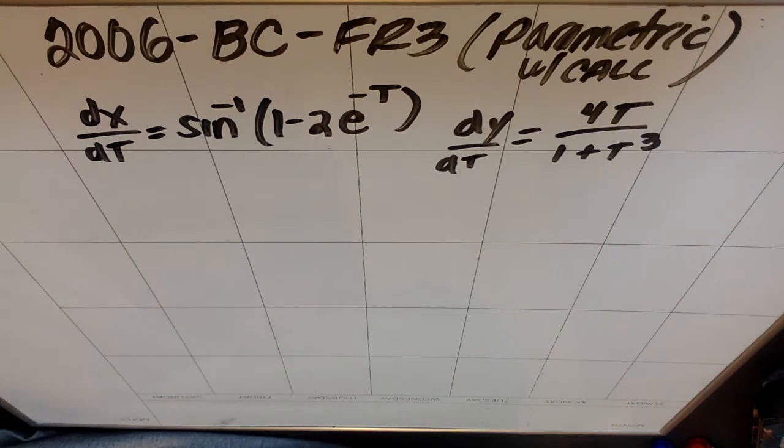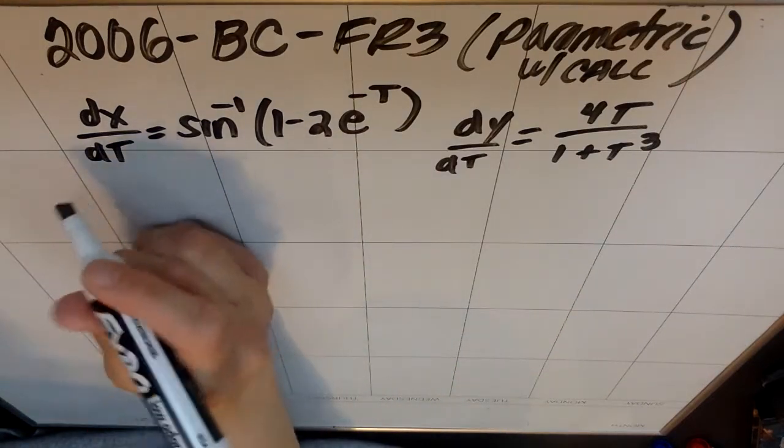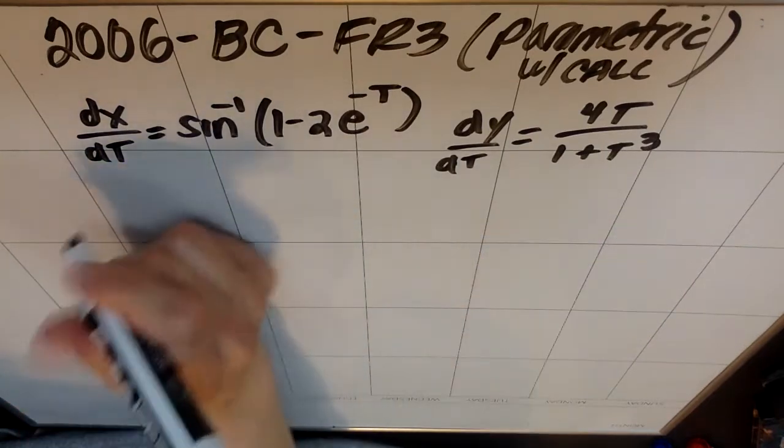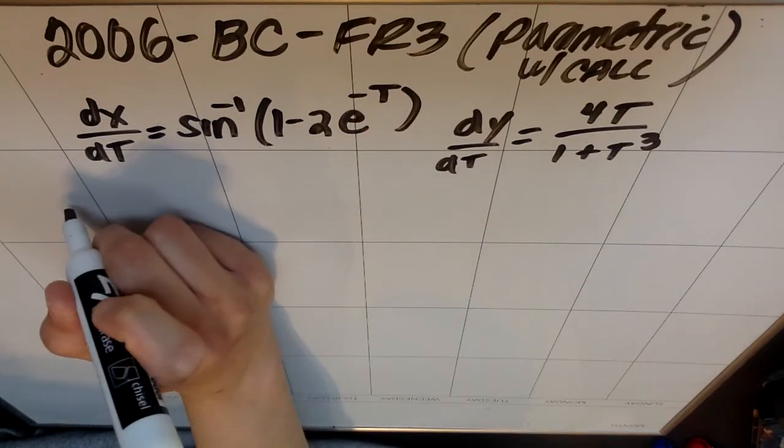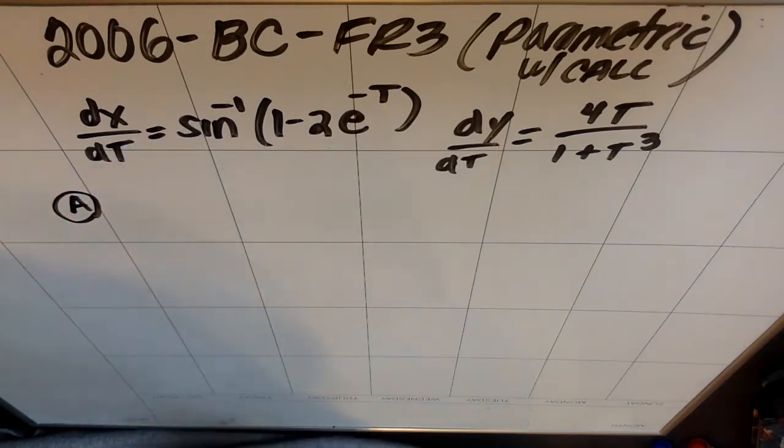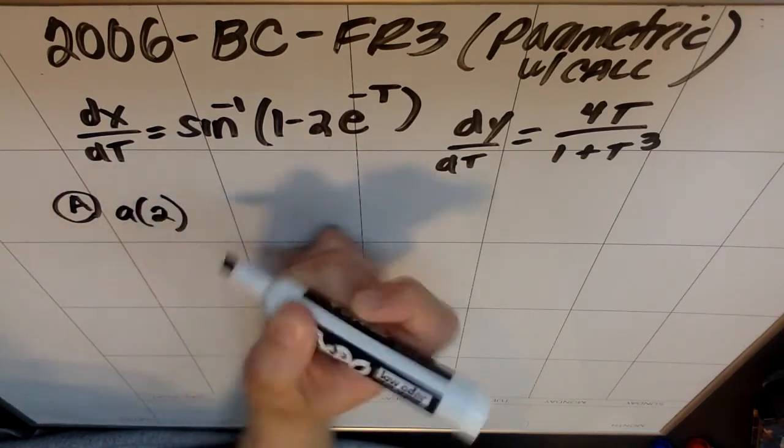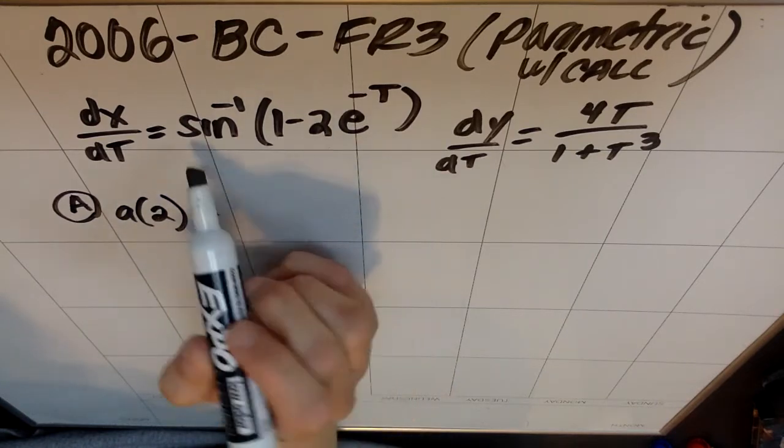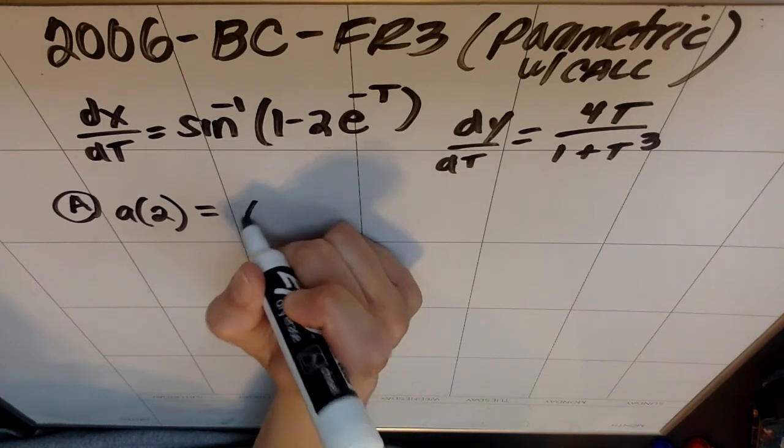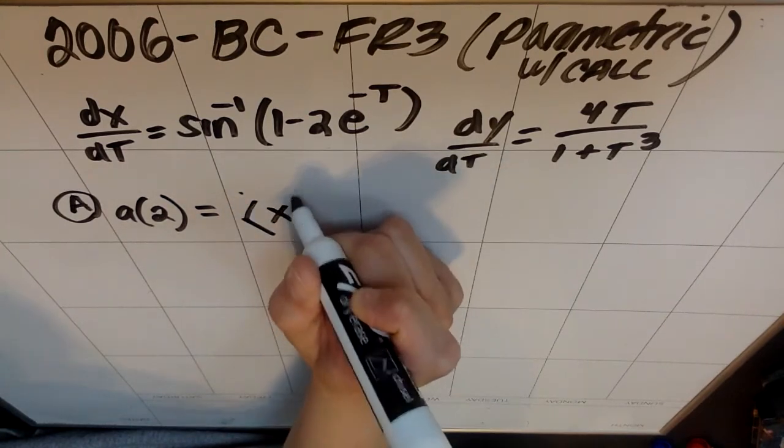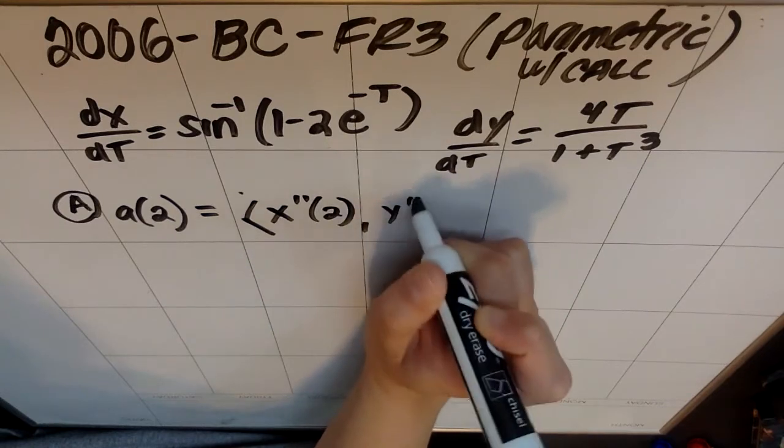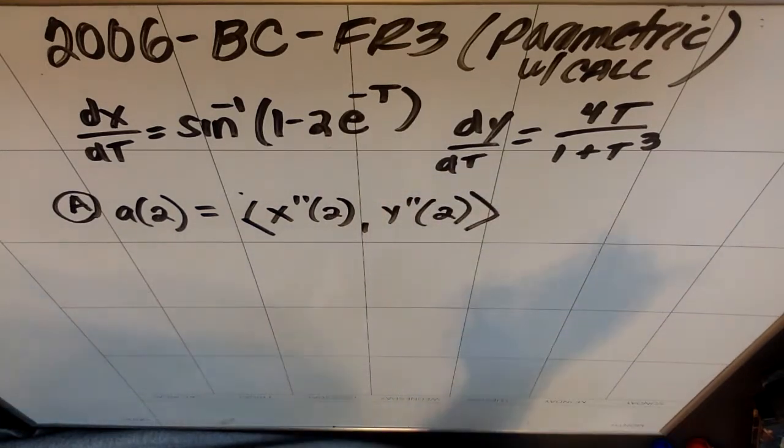We are also given the information that at time t equals 2, the object has position (6, -3). Part A: find the acceleration vector and the speed of the object at time t equals 2. Notice they're not asking you to find the acceleration vector all the time because that would be harder and you'd have to derive these by hand. What they're asking you to do is find the acceleration vector at 2.